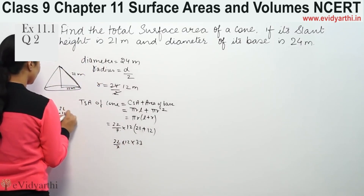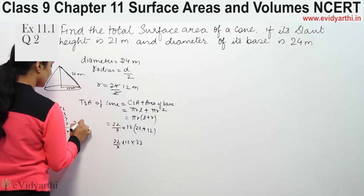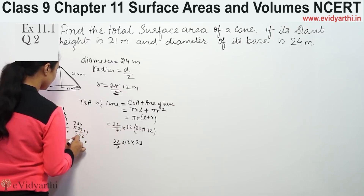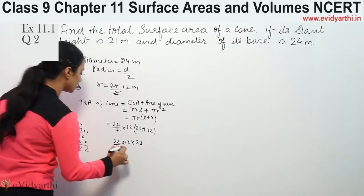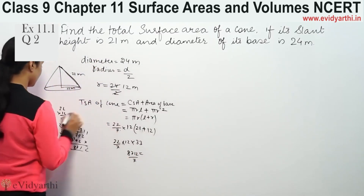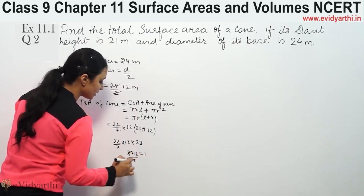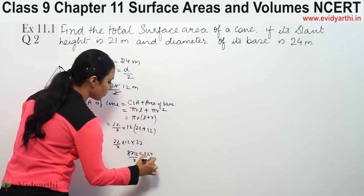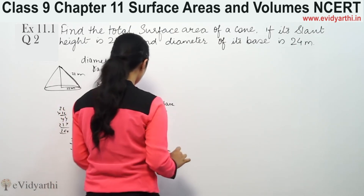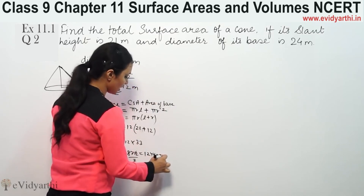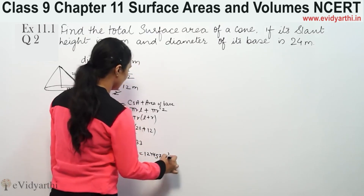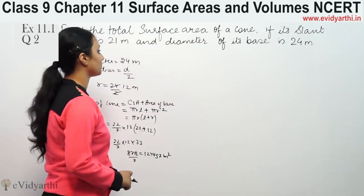Computing: 22 into 12 equals 264, and 264 into 33 equals 8712. Dividing by 7 gives approximately 1244.57. So the total surface area is 1244.57 square meters.